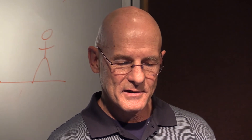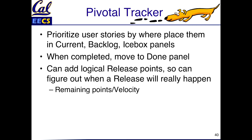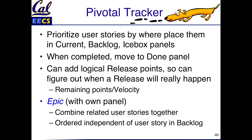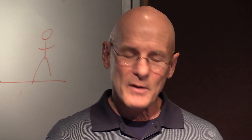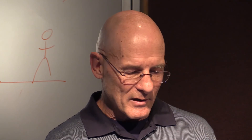You complete stories by moving them to the done panel. You can also add release points — when all related user stories are done, you mark a release and calculate the time to it by points. They also added an epic panel, where you put together a bunch of related user stories that together provide some important feature. Epics are independent of the backlog.